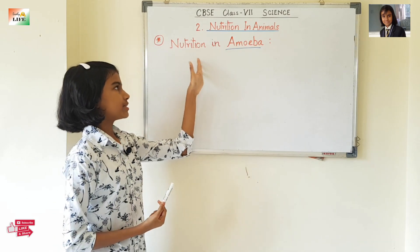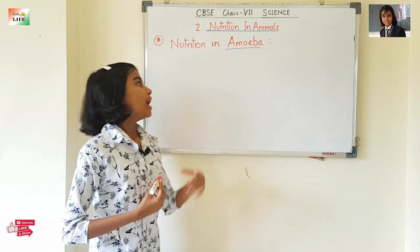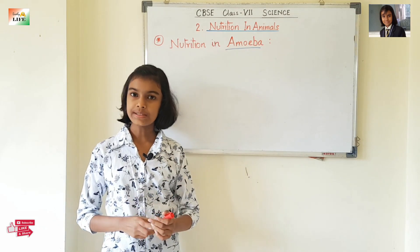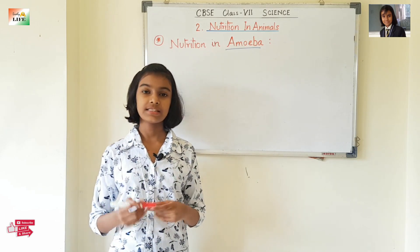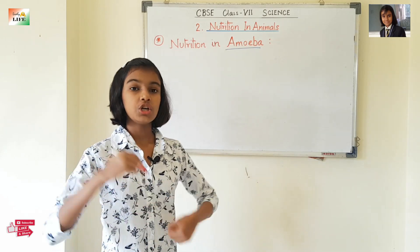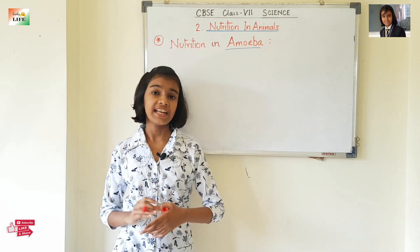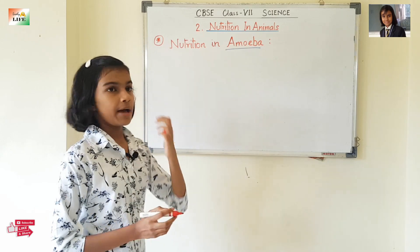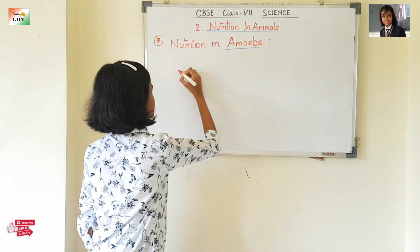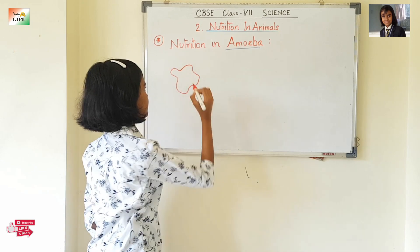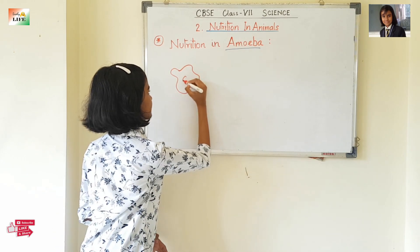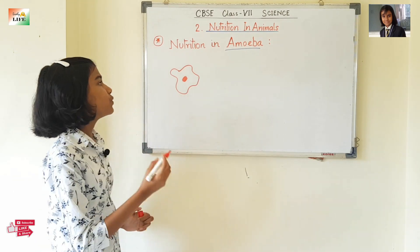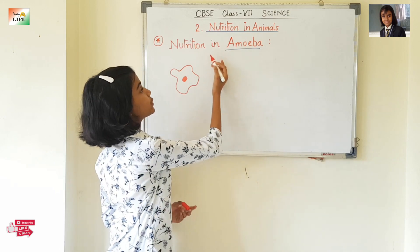Before learning about amoeba's nutrition, we need to know what an amoeba is. Amoeba is a unicellular organism — unicellular means single cell, so amoeba has only one cell. It is so small it can only be seen through a microscope. Amoeba has no definite shape, and it has a nucleus in the middle.